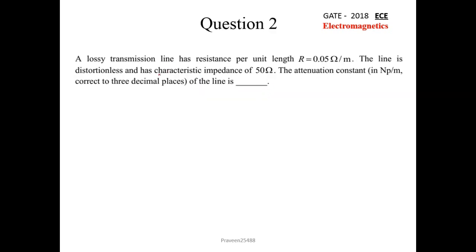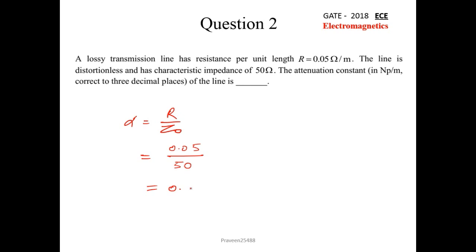Next question: A lossy transmission line has resistance per unit length R = 0.05 ohm per meter. The line is distortion-less and has a characteristic impedance of 50 ohm. Find the attenuation constant in Nepers per meter to three decimal places. We can directly calculate α = R / Z₀ = 0.05 / 50 = 0.001 Np/m.